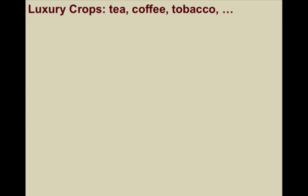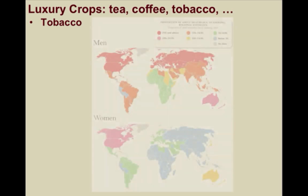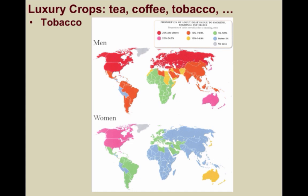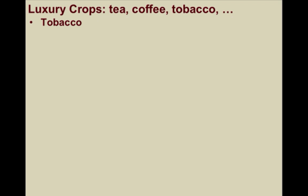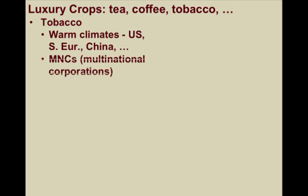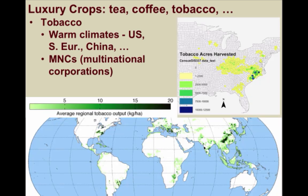Yet another major luxury crop is tobacco. According to the World Health Organization, tobacco is the single greatest cause of preventable death globally. More than 5 million people a year die from tobacco-related conditions. Tobacco is grown in warm climates, and most is produced through large multinational corporations in regions like China, India, Brazil, and the United States.